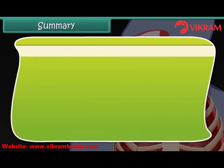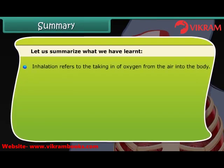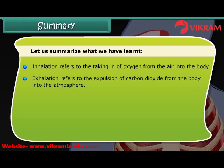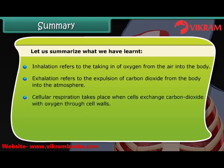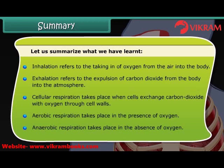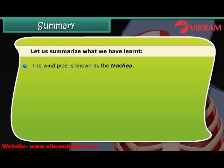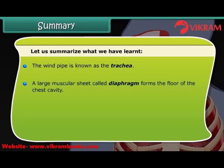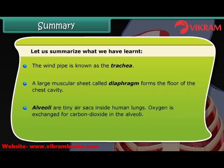Let us summarize what we have learned. Inhalation refers to the taking in of oxygen from the air into the body. Exhalation refers to the expulsion of carbon dioxide from the body into the atmosphere. Cellular respiration takes place when cells exchange carbon dioxide with oxygen through cell walls. Aerobic respiration takes place in the presence of oxygen, and anaerobic respiration takes place in the absence of oxygen. The windpipe is known as the trachea. A large muscular sheet called the diaphragm forms the floor of the chest cavity. Alveoli are tiny air sacs inside human lungs, where oxygen is exchanged for carbon dioxide.